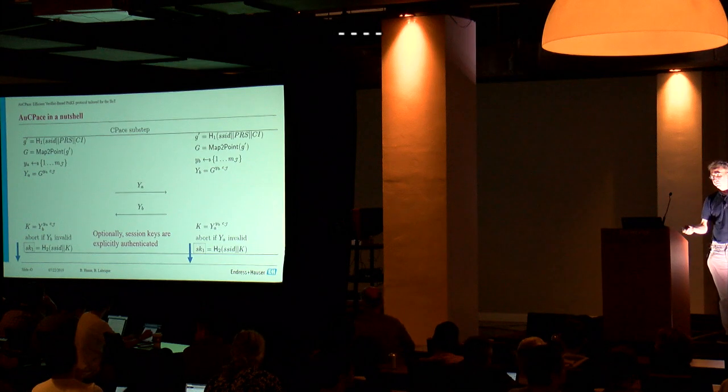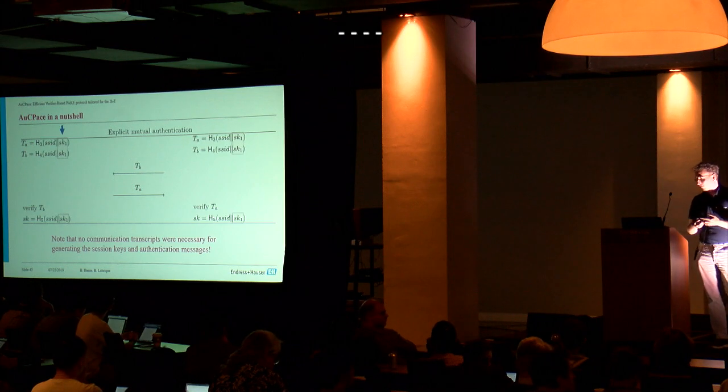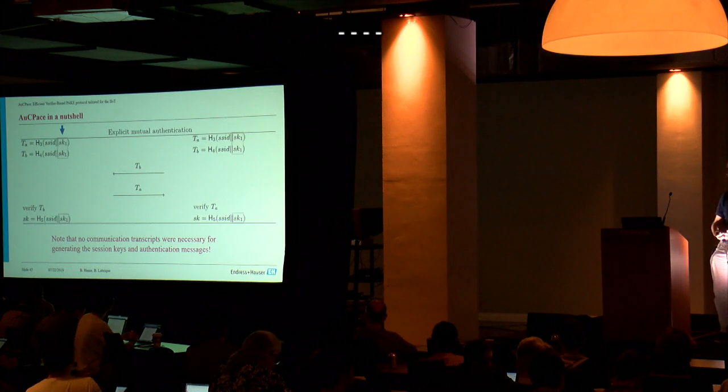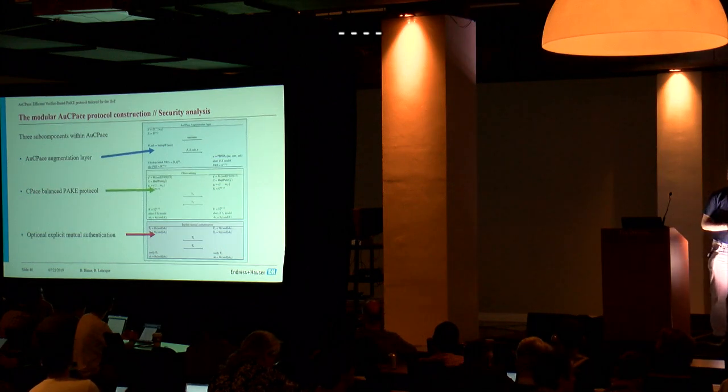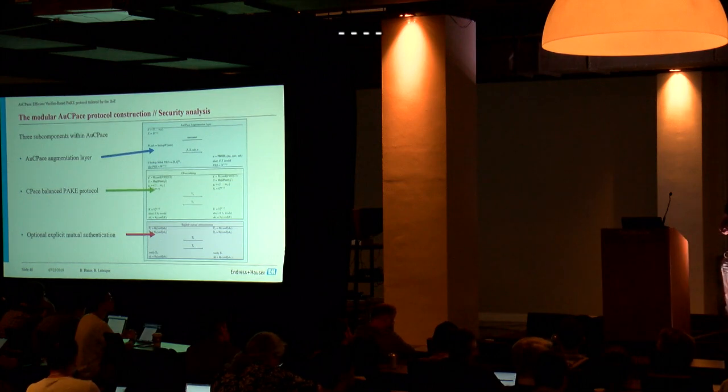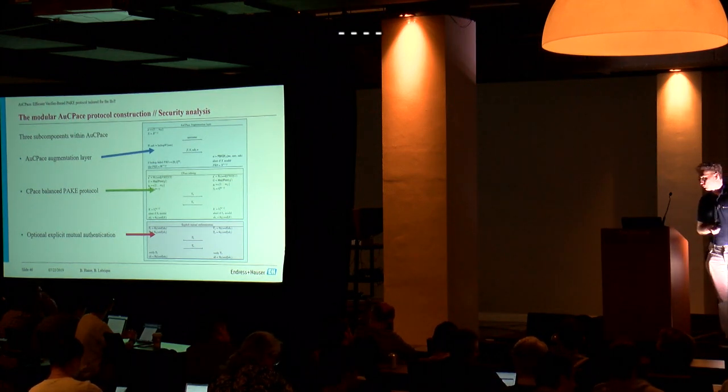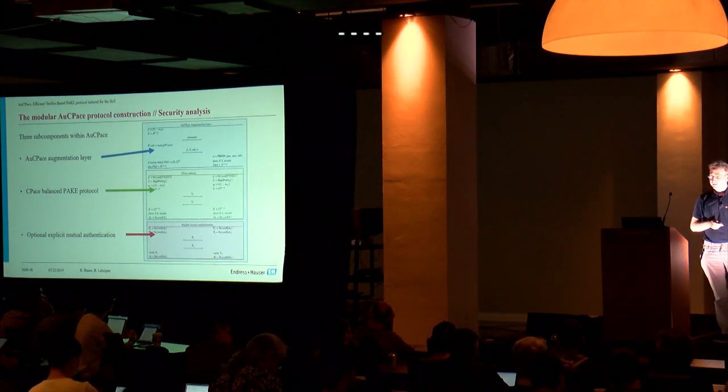For our reference implementation, we use Elligator2 and SHA512. Subsequently, we use Diffie-Hellman for generating a shared secret. We could realize a simplified point verification if those groups have secure quadratic twists. And the generated session keys match if and only if the password related string and the associated data match. Optionally, the session key is subsequently explicitly authenticated. One feature for this authentication is that we don't need the full transcript.